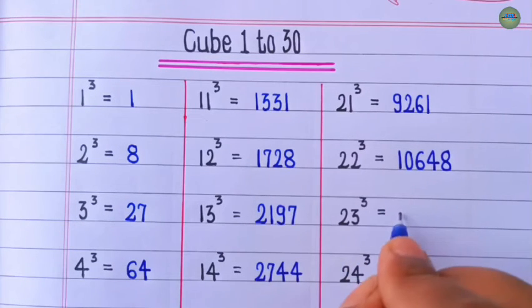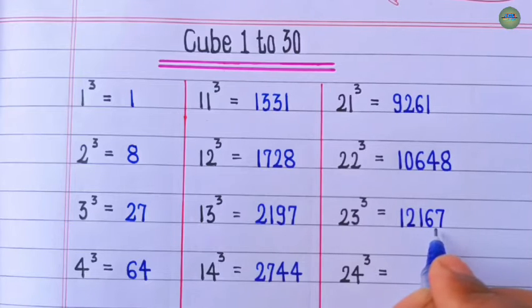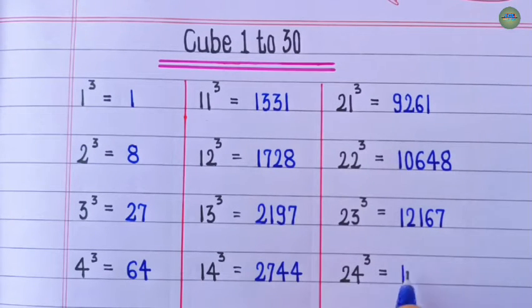Cube of 23 is 12,167. Cube of 24 is 13,824.